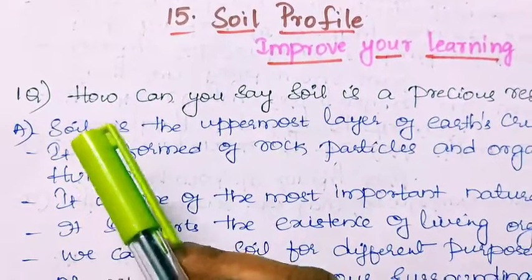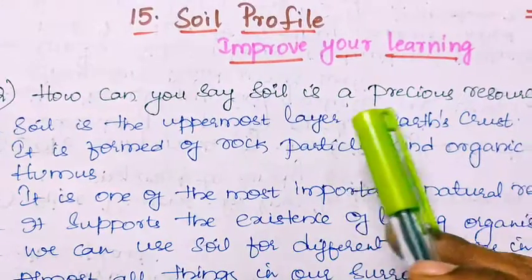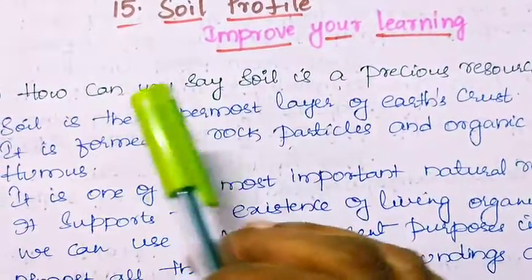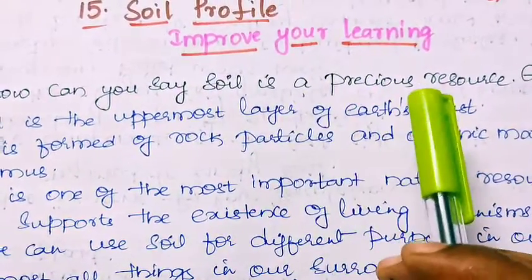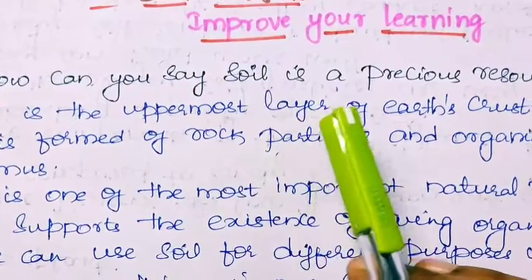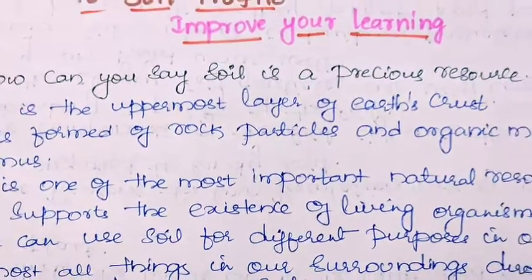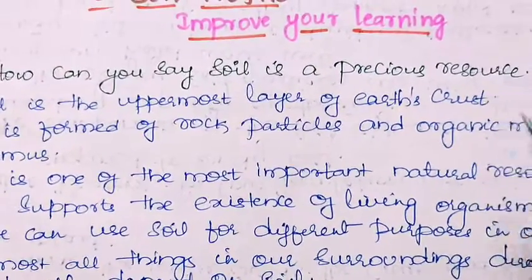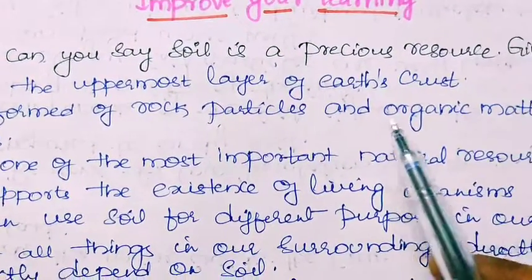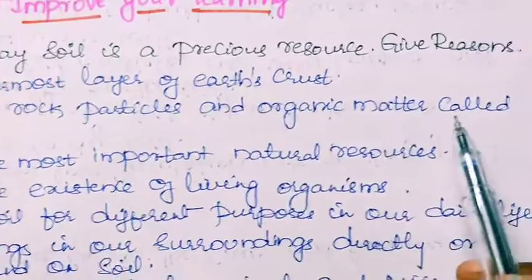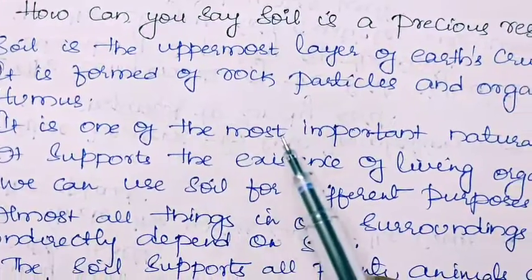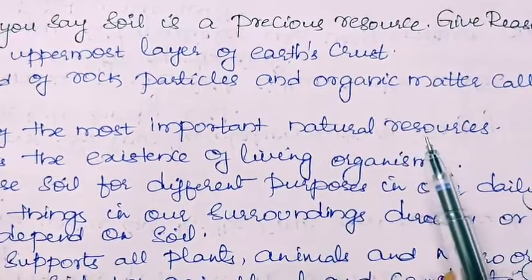Look at the first question. How can you say soil is a precious resource? Give reasons. We will explain why soil is called a precious resource. Soil is the uppermost layer of earth's crust. It is formed of rock particles and organic matter called humus. It is one of the most important natural resources.